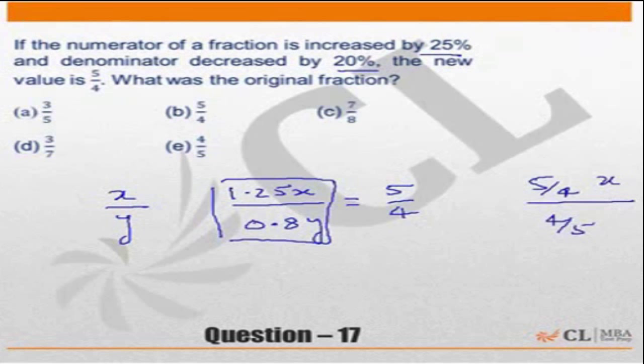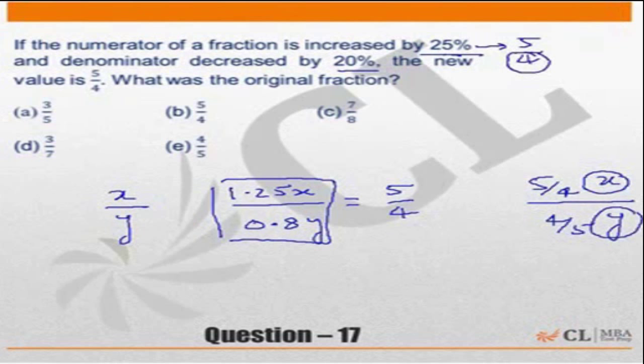Or in other words, x should be a multiple of 4 and y should be a multiple of 5. So the moment you look at it increased by 25% that means it has become 5 by 4 times so the numerator must be a multiple of 4. And any choice which does not have a numerator which is a multiple of 4 has to be incorrect. And that is the only one.